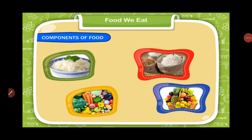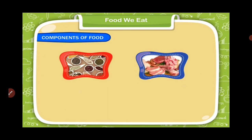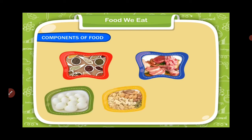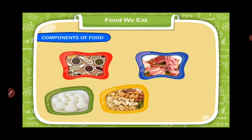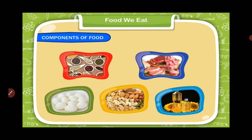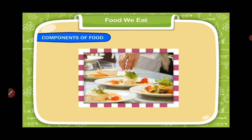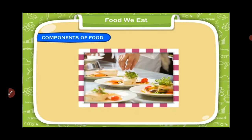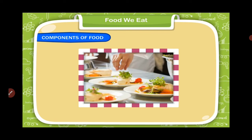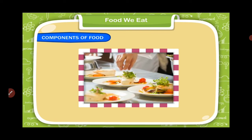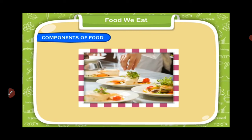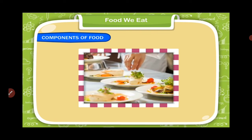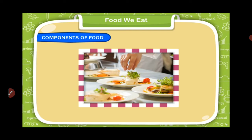Children, as you all know, different food substances have different nutrients. Nutrients present in food can be divided into five main groups according to the function they perform in the body. They are also called the components of food.